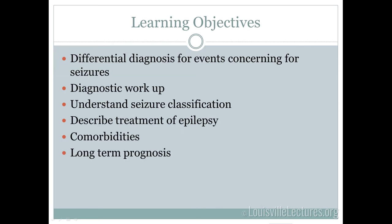Here are the learning objectives. We're going to talk about the differential diagnosis for events concerning for seizures. Studies have shown that even seizure specialists find it hard to determine what is and isn't a seizure just by observing people, which is why different diagnostic tests are really helpful. We'll also talk about the workup, seizure classification, treatment, different comorbidities to look out for, and long-term prognosis.